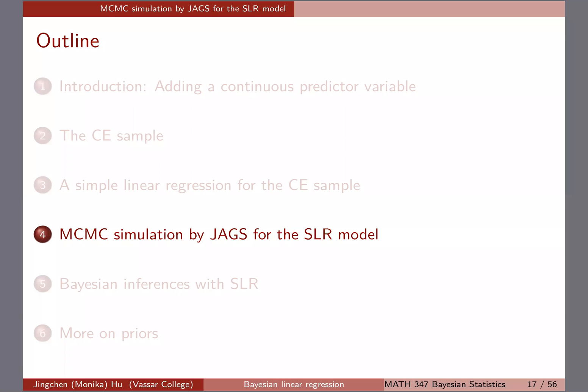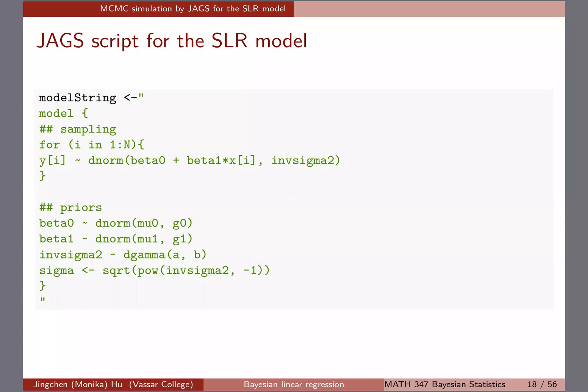To do MCMC simulation by JAX for the simple linear regression model, we're going to look at the model string first. I'll also pause here to give you time to connect this to what you know already, especially from last chapter where we talked about hierarchical modeling using the normal model. Note that D_norm in the JAX script takes mean and precision, so that's why you see those different values.